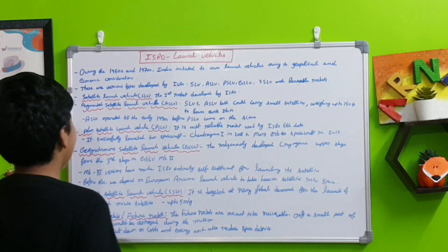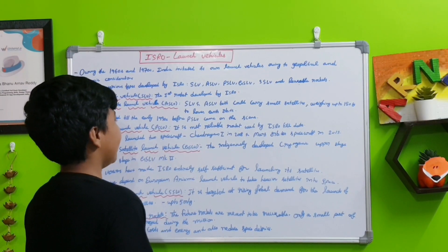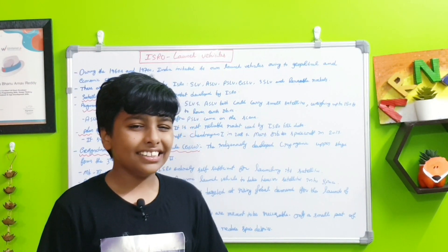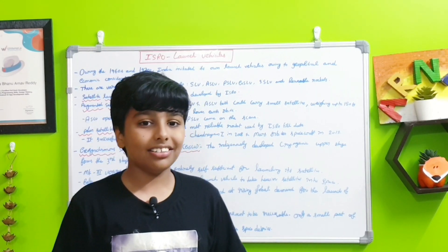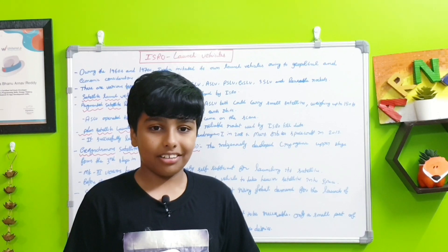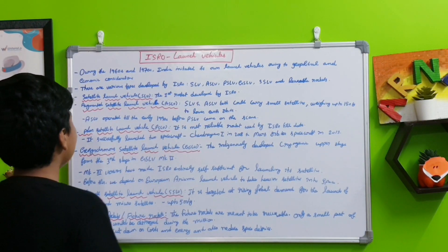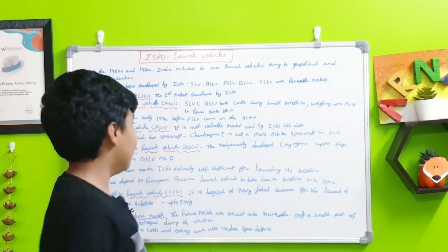The ASLV operated till the early 1990s before the PSLV came on the scene. The ASLV wasn't that good of a rocket, so ISRO preferred other rockets. Next, the PSLV or Polar Satellite Launch Vehicle.